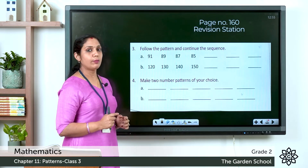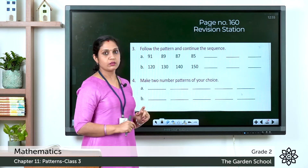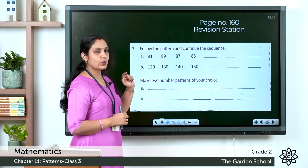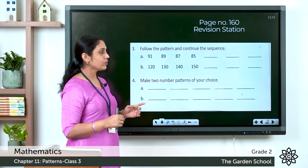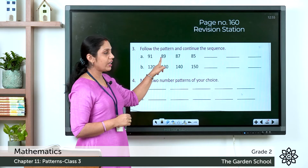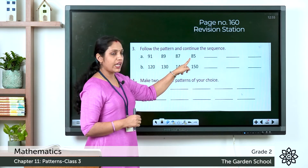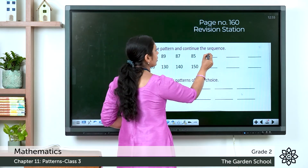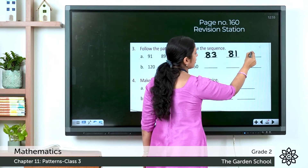Question three: follow the pattern and continue the sequence with number patterns. The sequence given is 91, 89, 87, 85. The numbers are decreasing by 2 each time: 91 minus 2 is 89, 89 minus 2 is 87, 87 minus 2 is 85. Continuing: 85 minus 2 is 83, then 81, then 79.